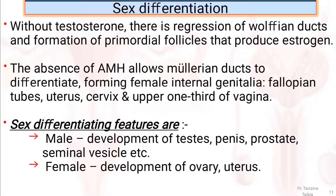Without testosterone, there is regression of the Wolffian ducts and formation of primordial follicles that produce estrogen. The absence of anti-Müllerian hormone allows the Müllerian ducts to differentiate, forming female internal genitalia — i.e., fallopian tubes, uterus, cervix, and the upper one-third of the vagina.